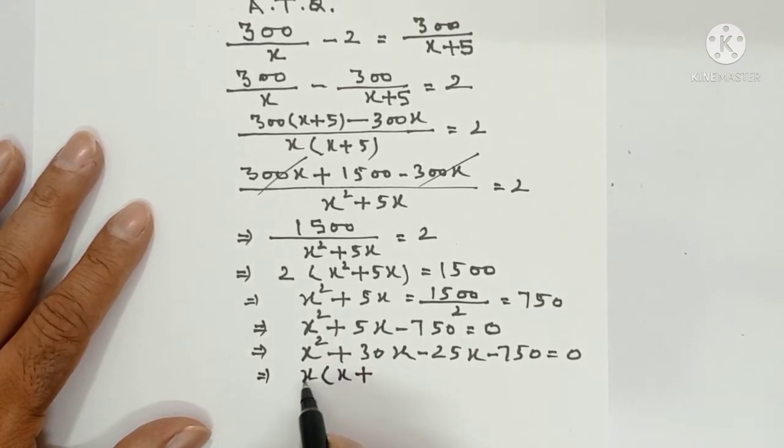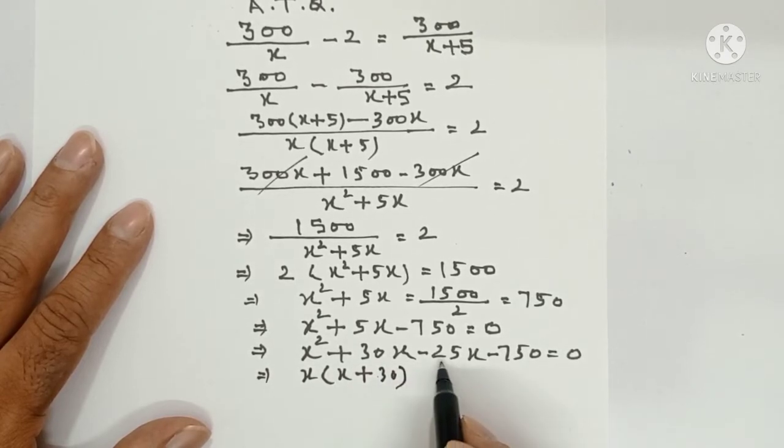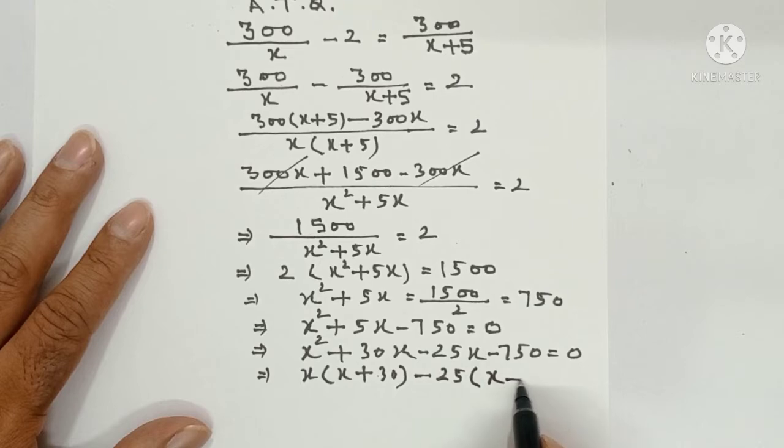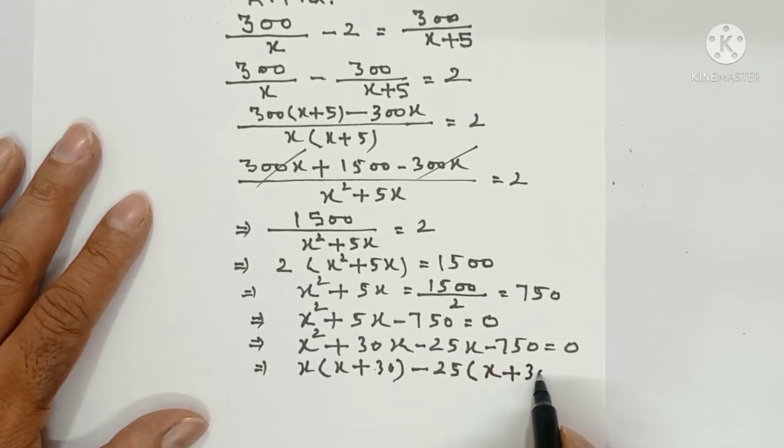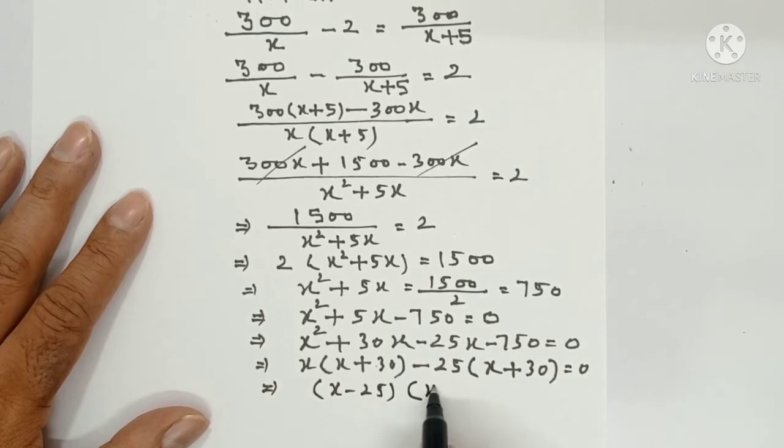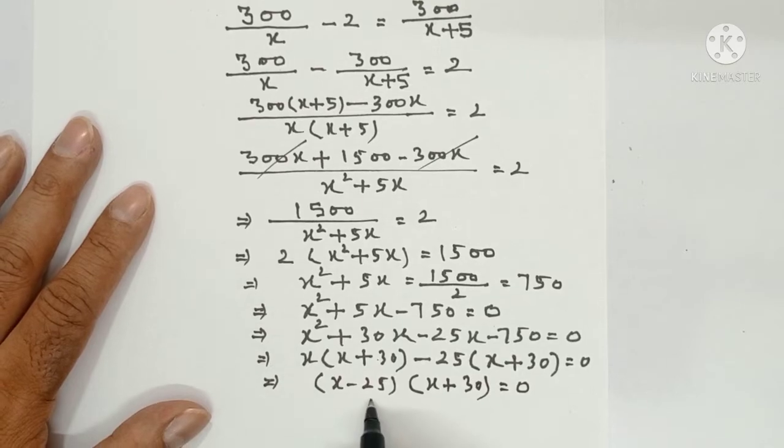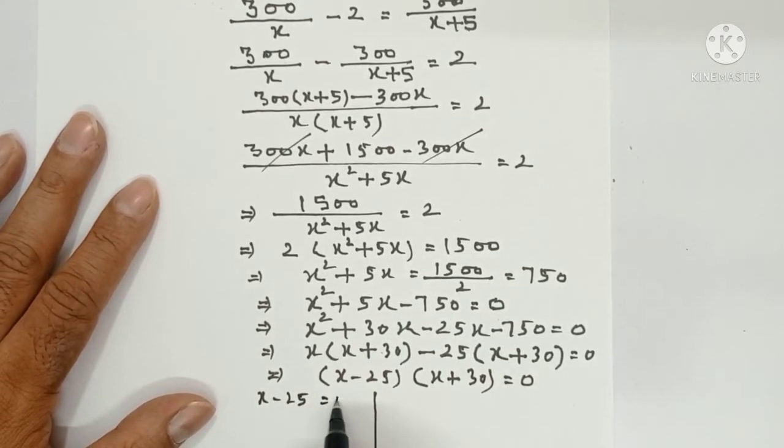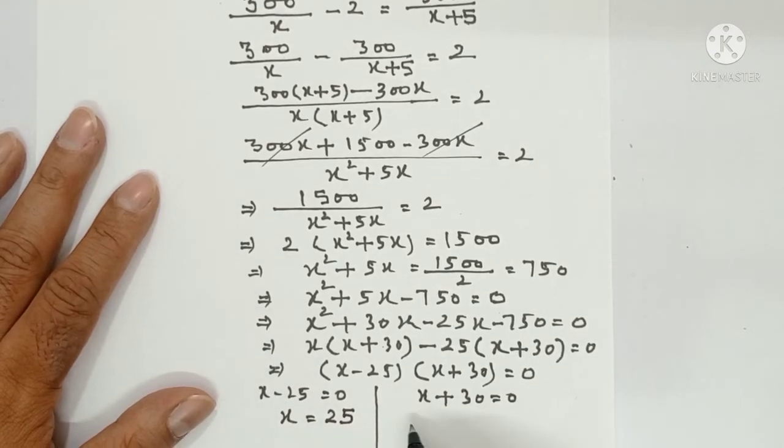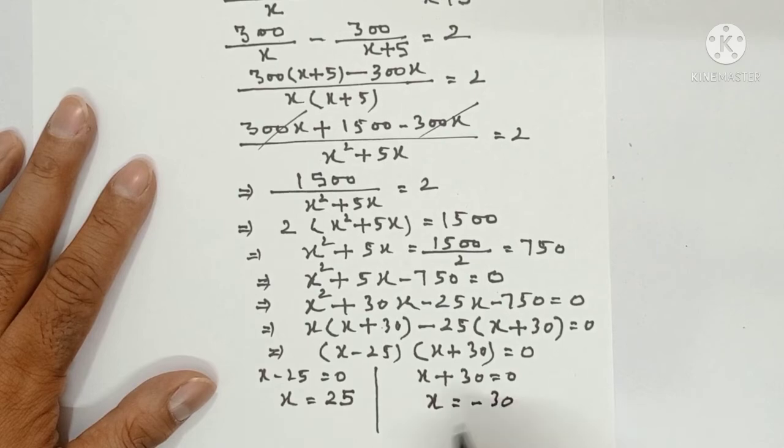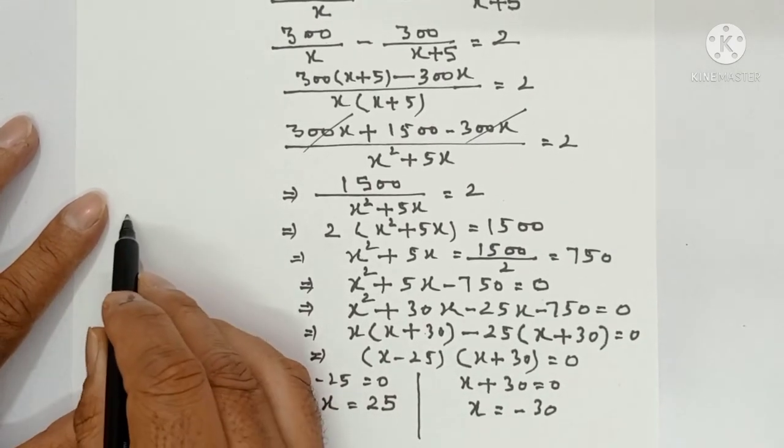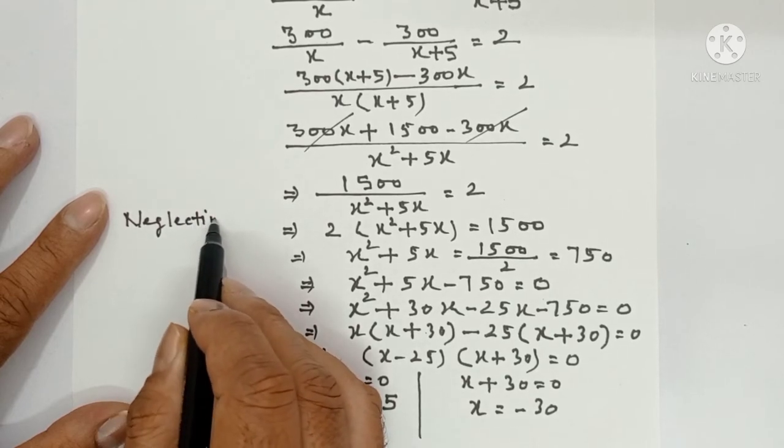So x square divided by x is x, 30x divided by x is 30. So one bracket is x minus 25 and one is x plus 30 equals 0. Now x minus 25 equals 0 or x plus 30 equals 0. x equals 25 or x equals minus 30. You assumed x as original speed of the train. Speed cannot be negative, so neglecting x equal to minus 30. Therefore x equals 25.